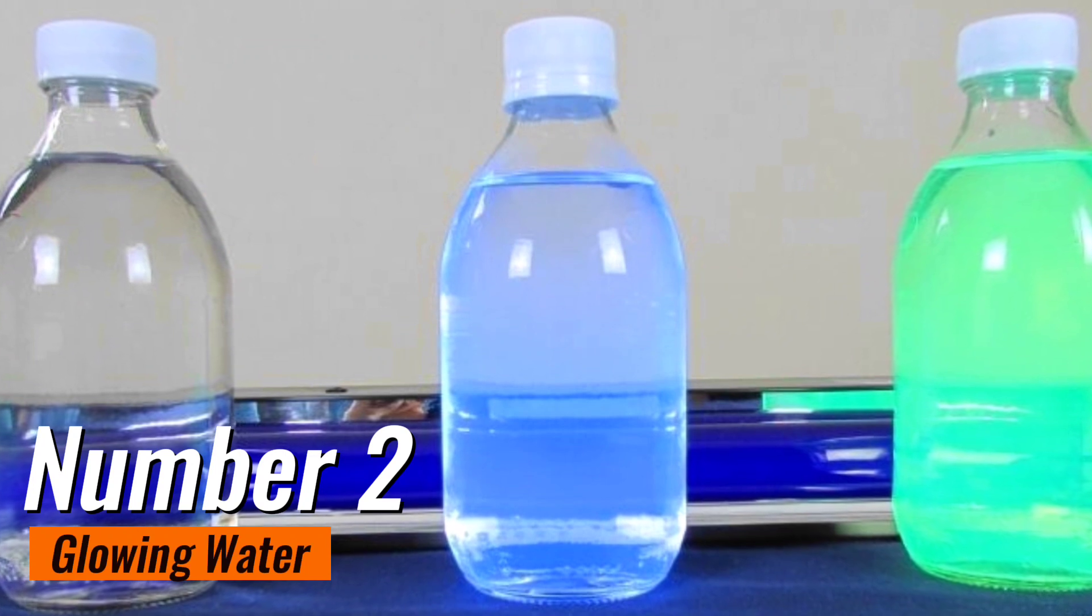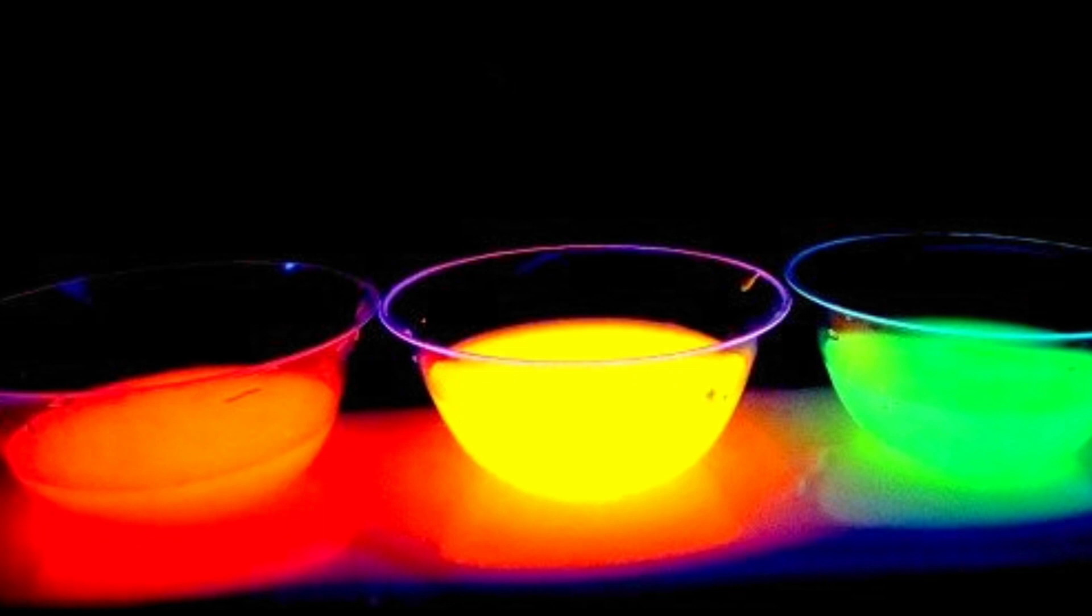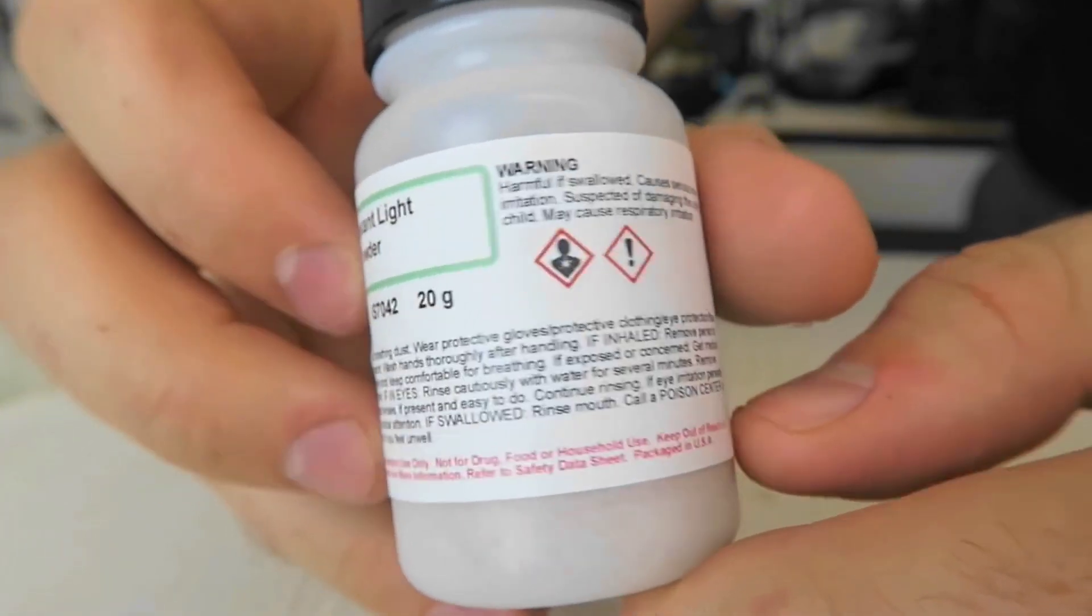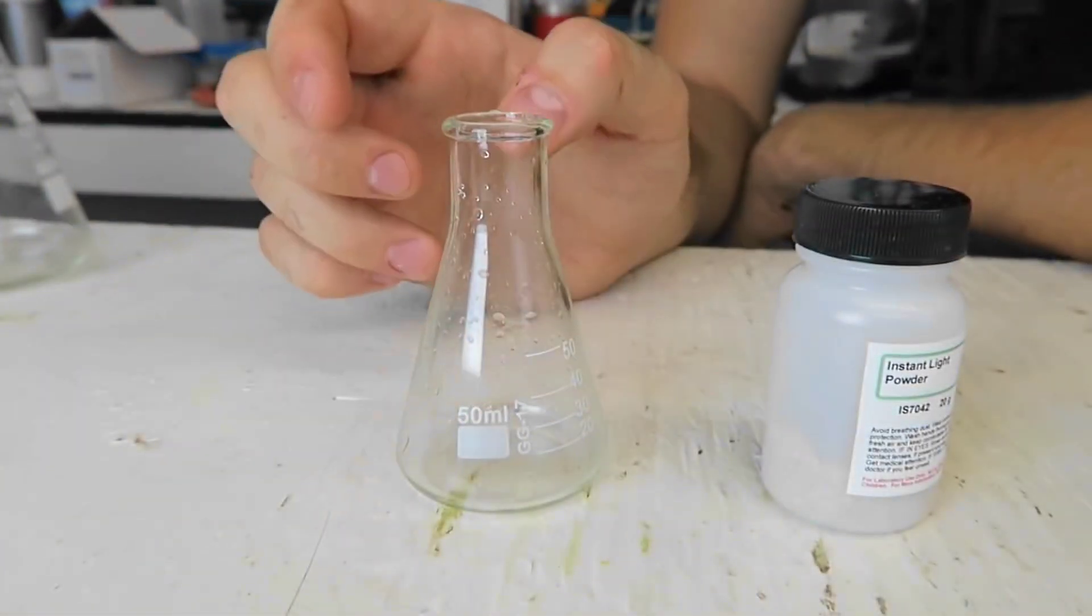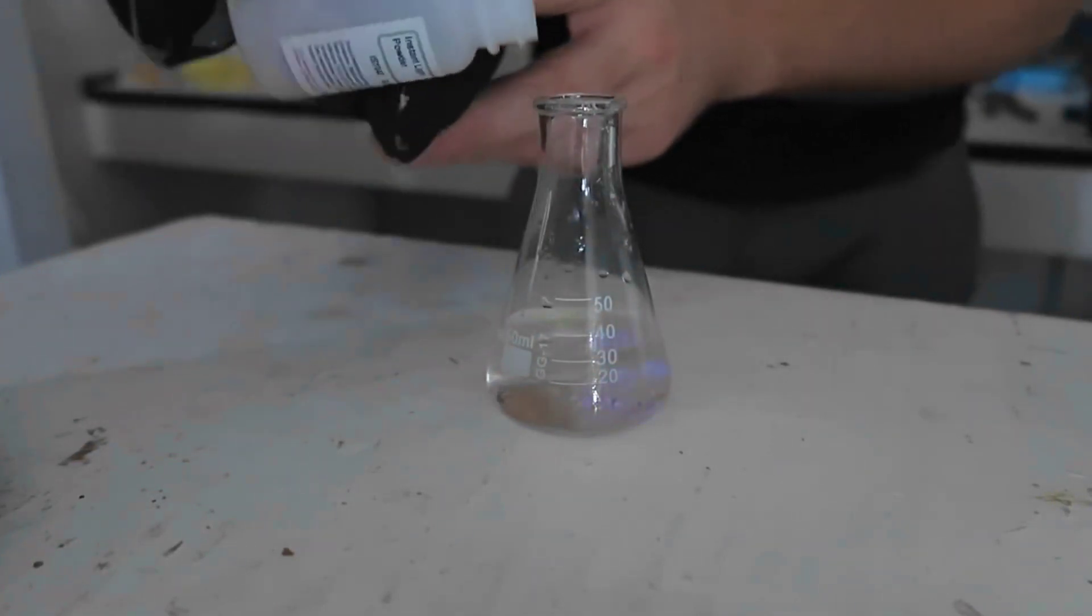Number 2. Glowing water. The glowing water experiment is a mesmerizing and magical science activity that will leave kids in awe. To perform this experiment, you will need tonic water, which contains quinine, a dark room, and a black light. Start by pouring the tonic water into a clear glass or container.